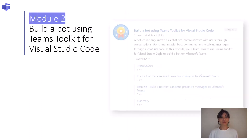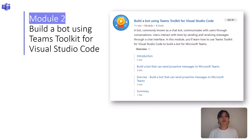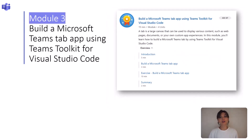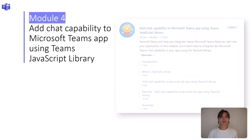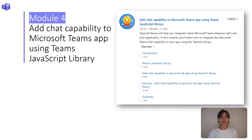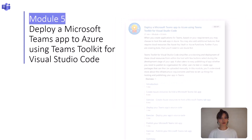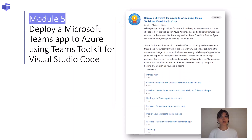In the second module, you will learn how to build a bot to send proactive messages to Teams. In the third module, you will learn how to build a personal tab app in Teams. In the fourth module, you will integrate a Teams tab app with the chat capability using the Teams JavaScript library. And in the final module, you will provision, deploy, and publish your Teams app by using Teams Toolkit for Visual Studio Code.